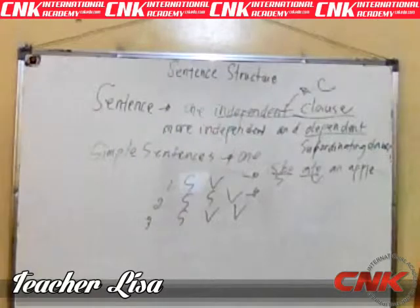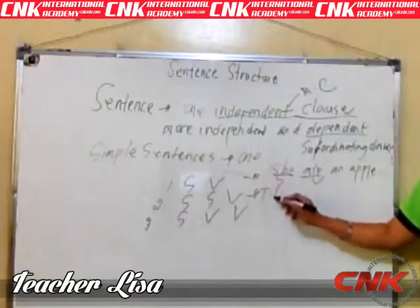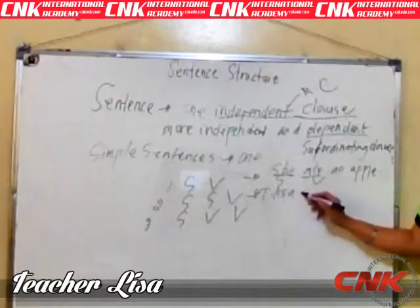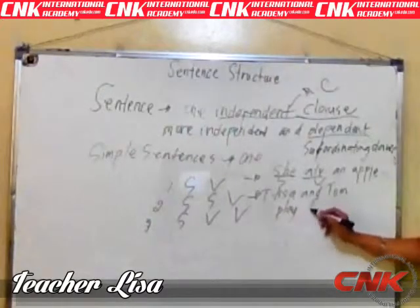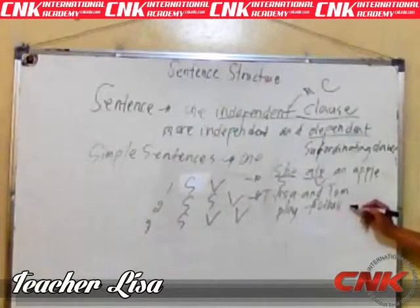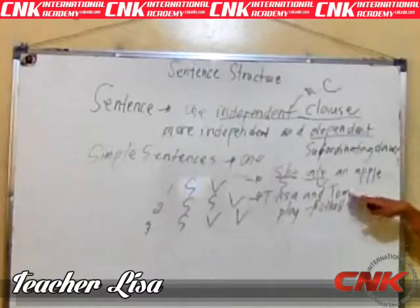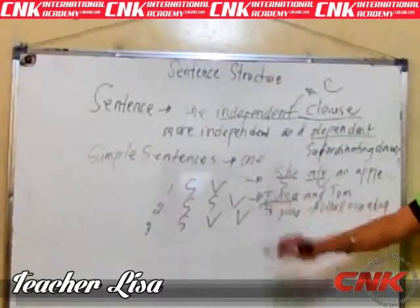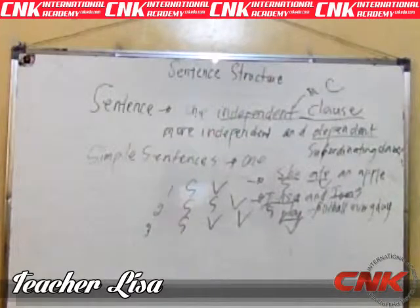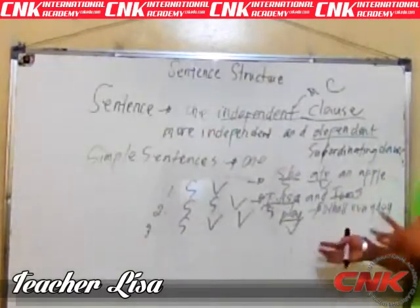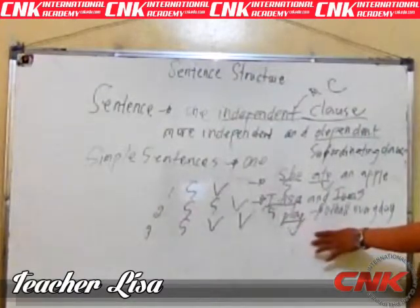For number two, we need two subjects and one verb. Example: 'Teacher Lisa and Tom play football every day.' We have teacher Lisa as one subject, Tom as another subject, and play as the verb. This is an example of a simple sentence because we have one subject, another subject, and a verb.